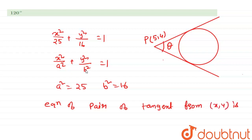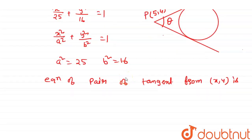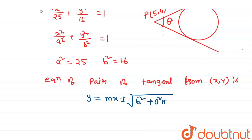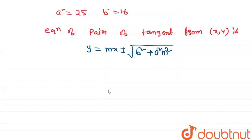b² = 16. There are 2 tangents. The tangent formula is y = mx ± √(b² + a²m²). Putting in the values of a² and b², we get y = mx ± √(16 + 25m²).